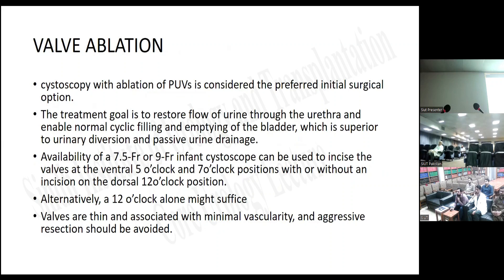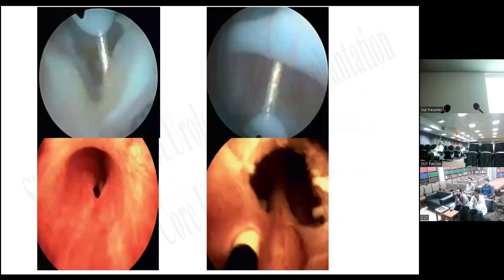Valve ablation: cystoscopy with ablation of posterior urethral valve is considered the preferred initial surgical option. The treatment goal is to restore flow of urine through the urethra and enable normal cycling, filling, and emptying of the bladder, which is superior to urinary diversion and passive urine drainage. A 7.5 or 9 French infant cystoscope can be used to incise the valves at the ventral 5 o'clock and 7 o'clock positions, with or without an incision at the dorsal 12 o'clock position. Valves are thin and associated with minimal vascularity, and aggressive resection should be avoided.